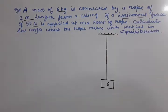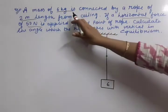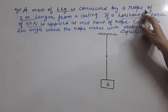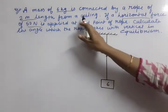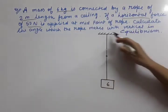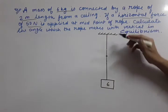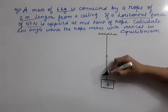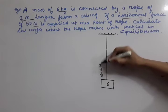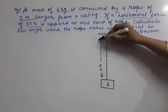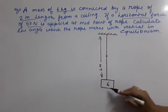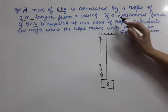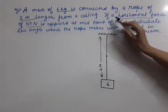So let us read the question. A mass of 6 kg is connected by a rope of 2 meter length from a ceiling. So suppose this is a support or ceiling shown. One rope is shown, this is of 2 meter, and one mass of 6 kg is hanging.